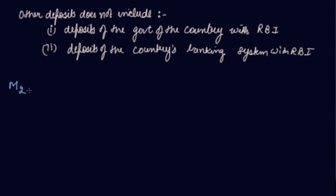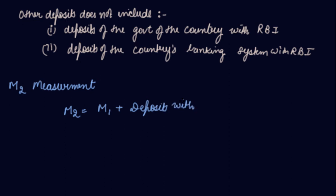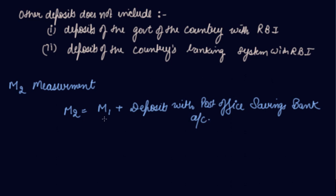M2 is a broader concept of money supply compared to M1. M2 includes everything in M1 plus deposits with the post office savings bank account. So any deposit you make in your post office account is added to M1's components — currency, DD, and OD — to give you M2.